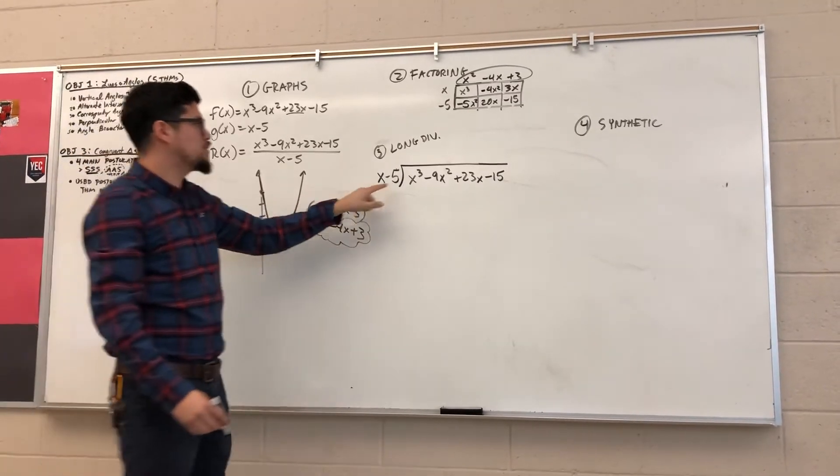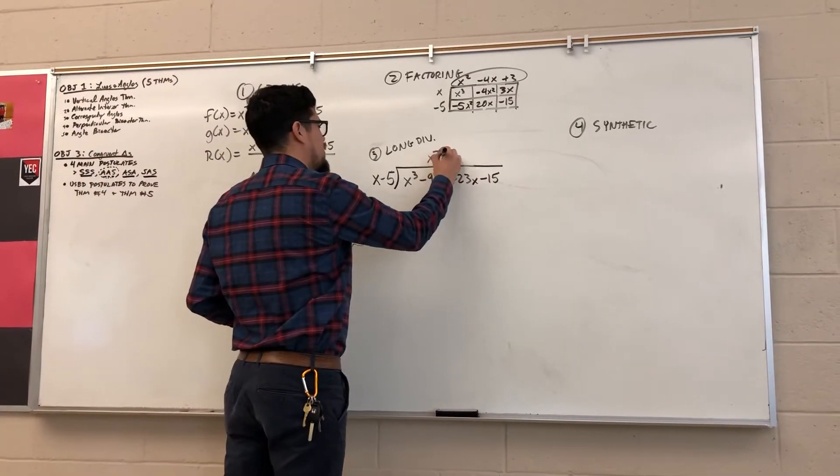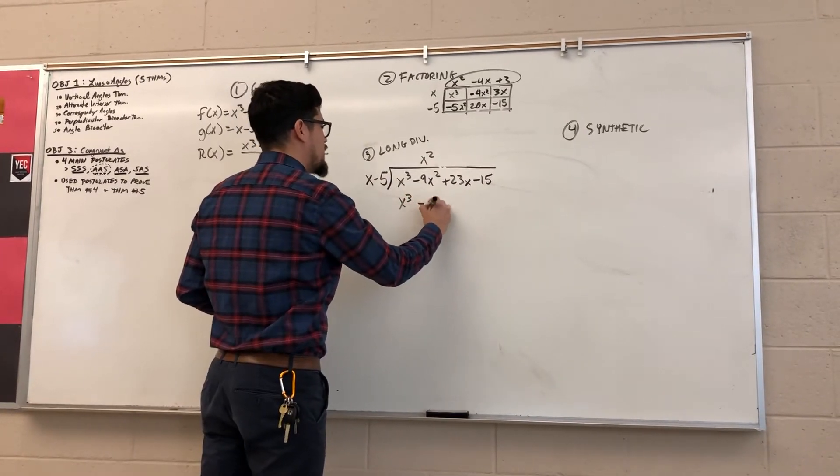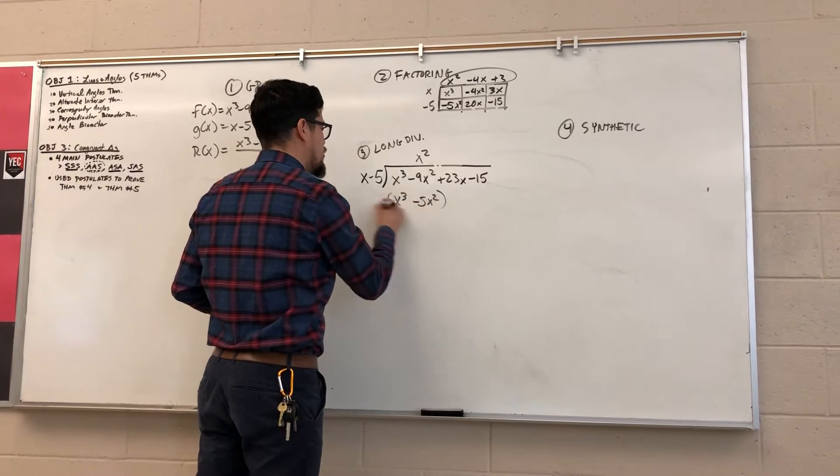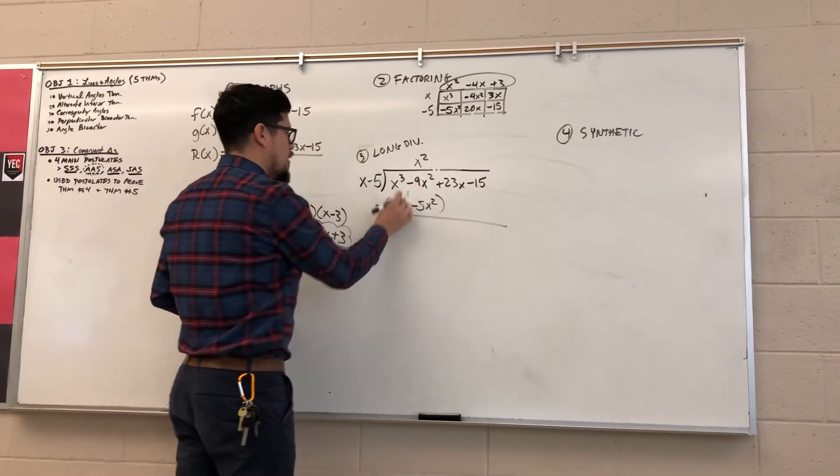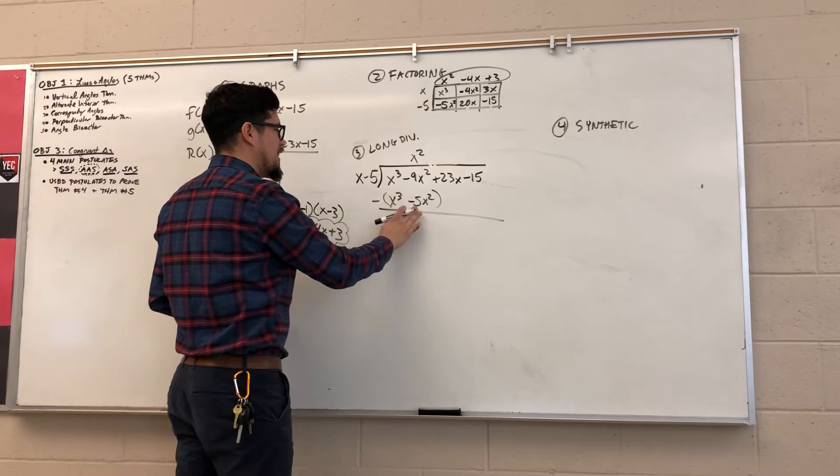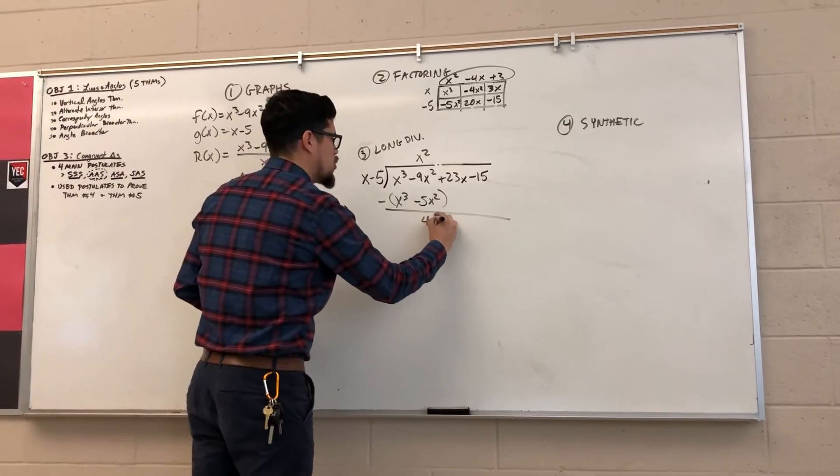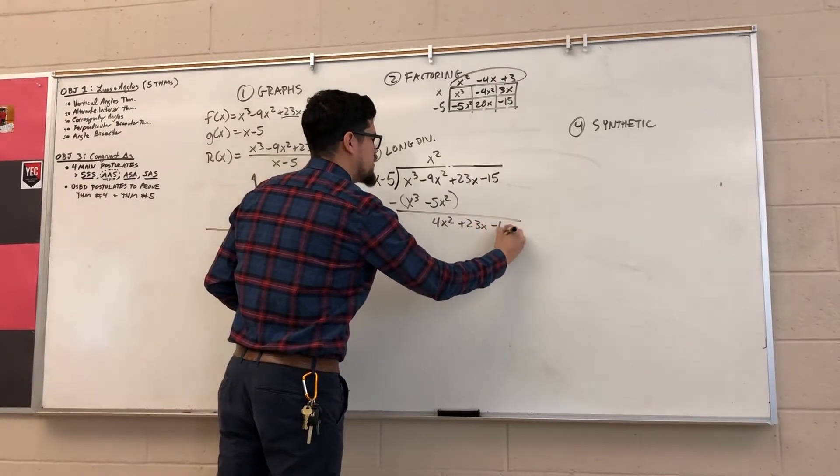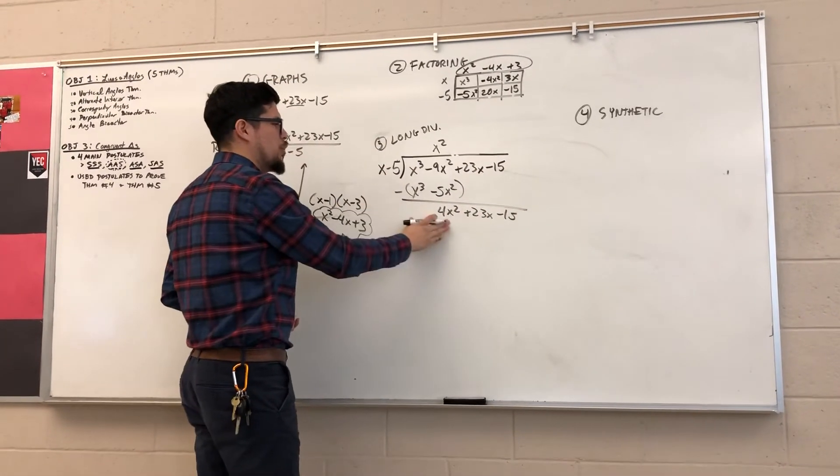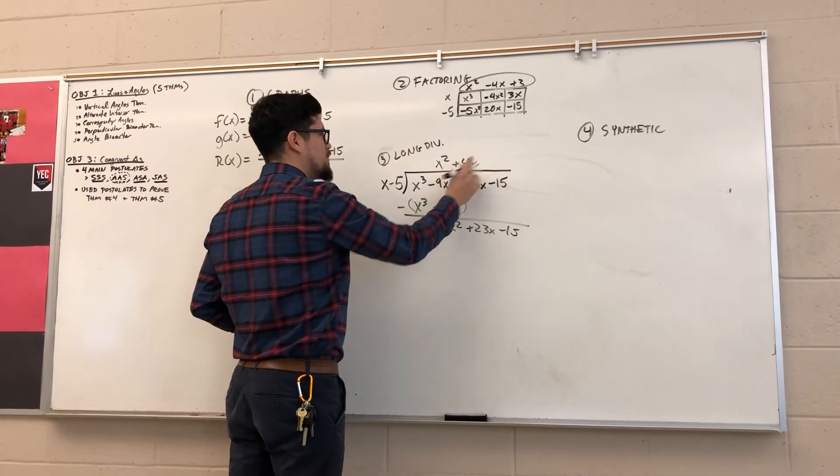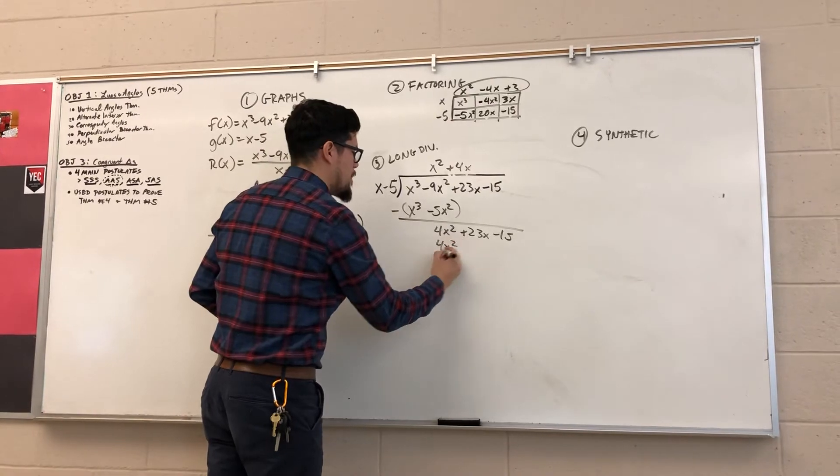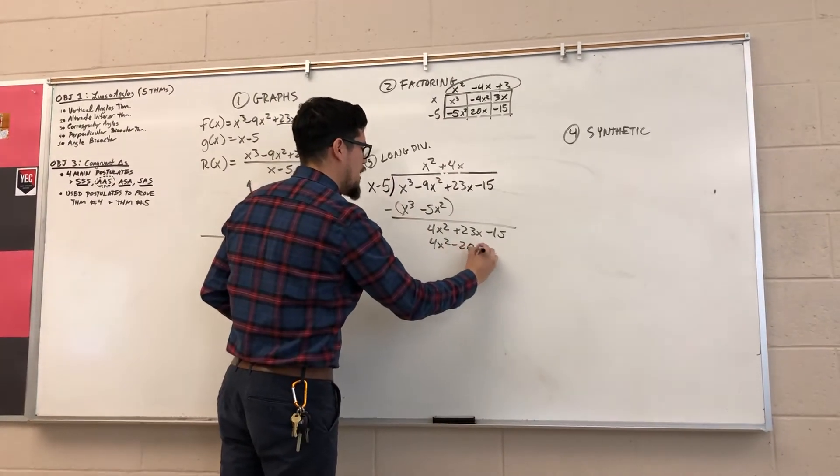x will go into x cubed x squared times. x squared times x minus 5 gives me x cubed minus 5x squared. I'm going to subtract that entire quantity. First ones cancel out. Negative 9 minus negative 5 is negative 9 plus 5. So I get 4x squared plus 23x minus 15. Rinse and repeat. x will go into 4x squared positive 4x times. 4x times x gives me 4x squared. 4x times negative 5 gives me negative 20x.